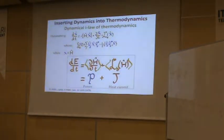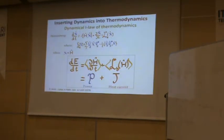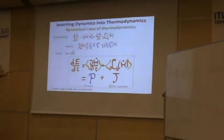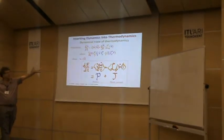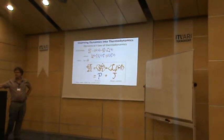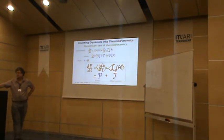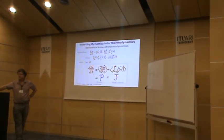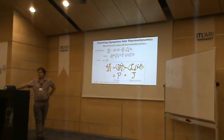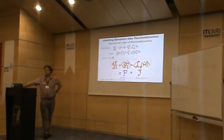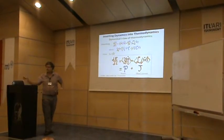A student asks: yesterday you said this separation between the two terms was not unique. That's correct — you caught me. In order to make this unique, there is a way: you need to derive Lindblad's equation from the Born-Markov approximation. This is called the Davis construction.